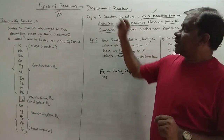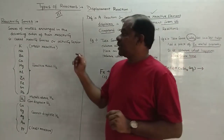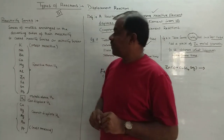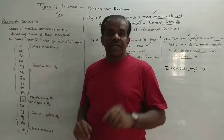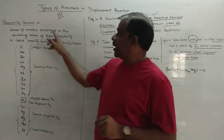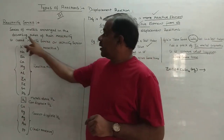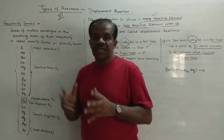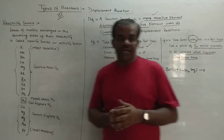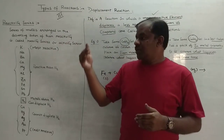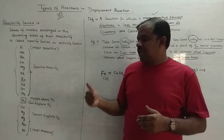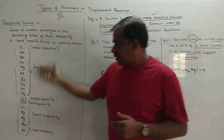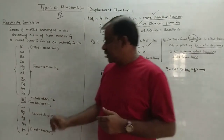In order to understand displacement reaction, first let us learn about what is meant by reactivity series. Reactivity series is a series of metals arranged in a decreasing order of their reactivity. When you try to arrange from the most reactive metal to the least reactive metal, what we get is the reactivity series.